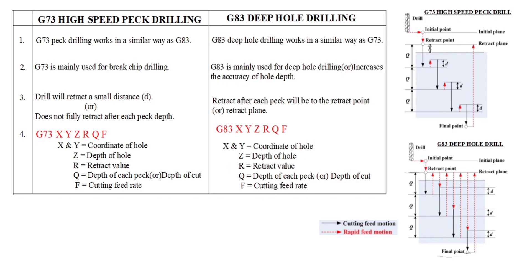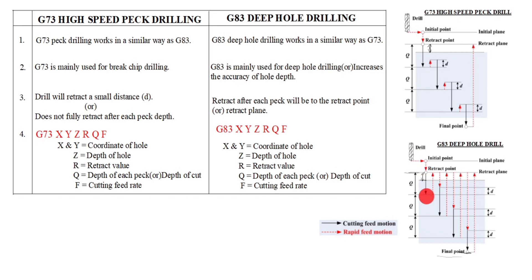R is the retract value — this is the retract value. Q is the depth of each peck or depth of cut. F is the cutting feed rate — you give F50 or F80. The black arrow represents cutting feed motion; the red dotted line represents rapid feed motion going upward. First we will see the G73 operation process.